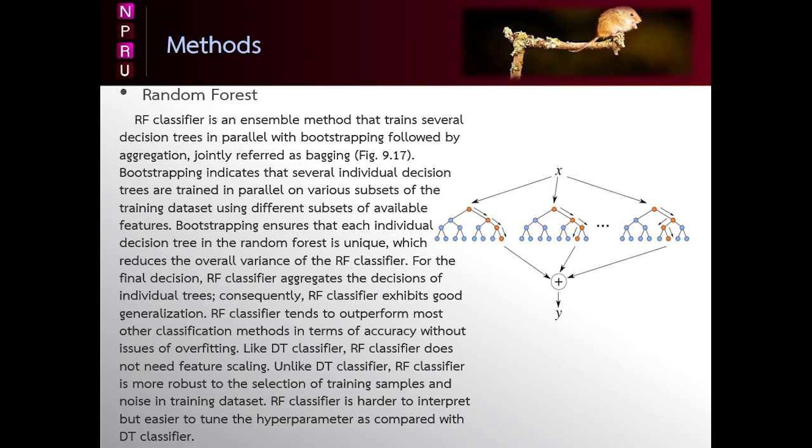Random forest, like its name implies, consists of a large number of individual decision trees that operate as an ensemble. Each individual tree in the random forest spits out a class prediction and the class with the most votes becomes our model's prediction. Random forest is a simple but powerful tool, the wisdom of crowds. In data science speak, the reason that the random forest model works so well is a large number of relatively uncorrelated models operating as a committee will outperform any of the individual constituent models.